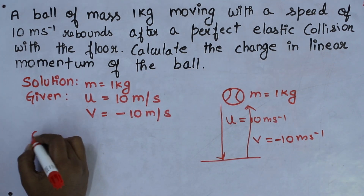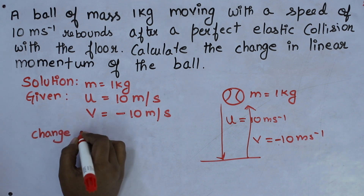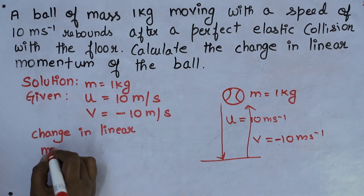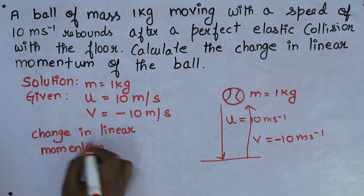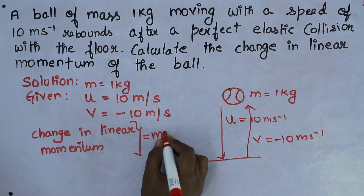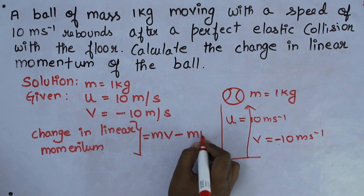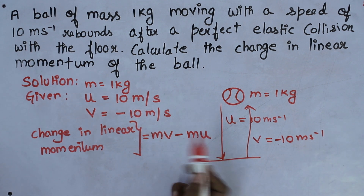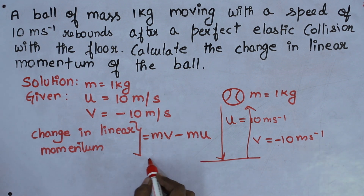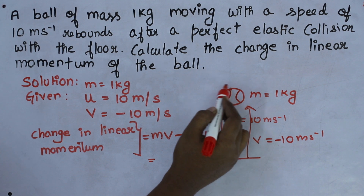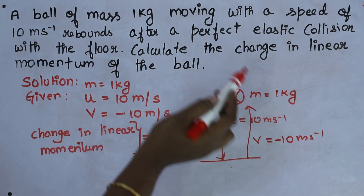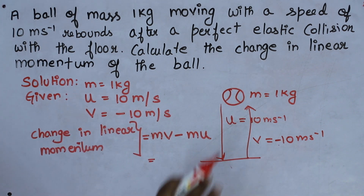They are asking us to find the change in linear momentum. The formula for momentum is mass into velocity. Since we have initial and final velocity, the formula is: change in momentum equals m times final velocity minus m times initial velocity. The mass remains the same because it is the same ball of 1 kg going down and rebounding.